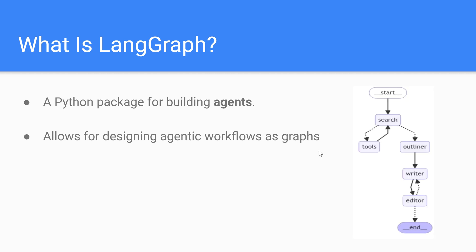As you can see right here, this is a picture of an agentic workflow that is represented as a graph, and this is an actual agent that you're going to build in this course. All these nodes are models — remember, it's a graph, so it has nodes and edges. This one right here is a tool node. The search model, with this conditional edge, can call the tools node, and then the tools node sends its output right back to the search model. The search model can then take that output and pass it to the outliner.